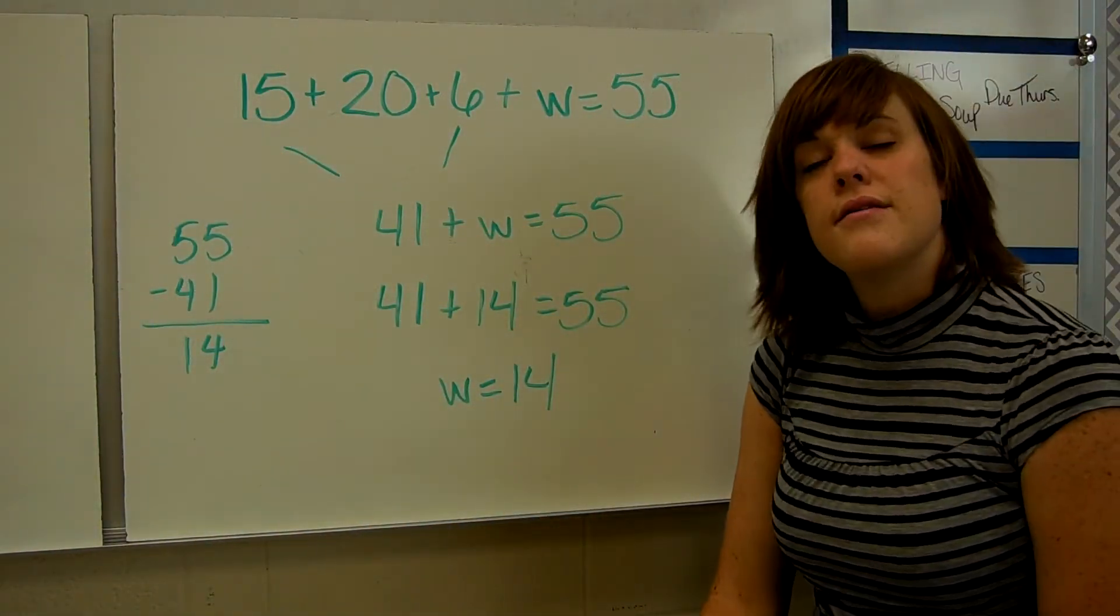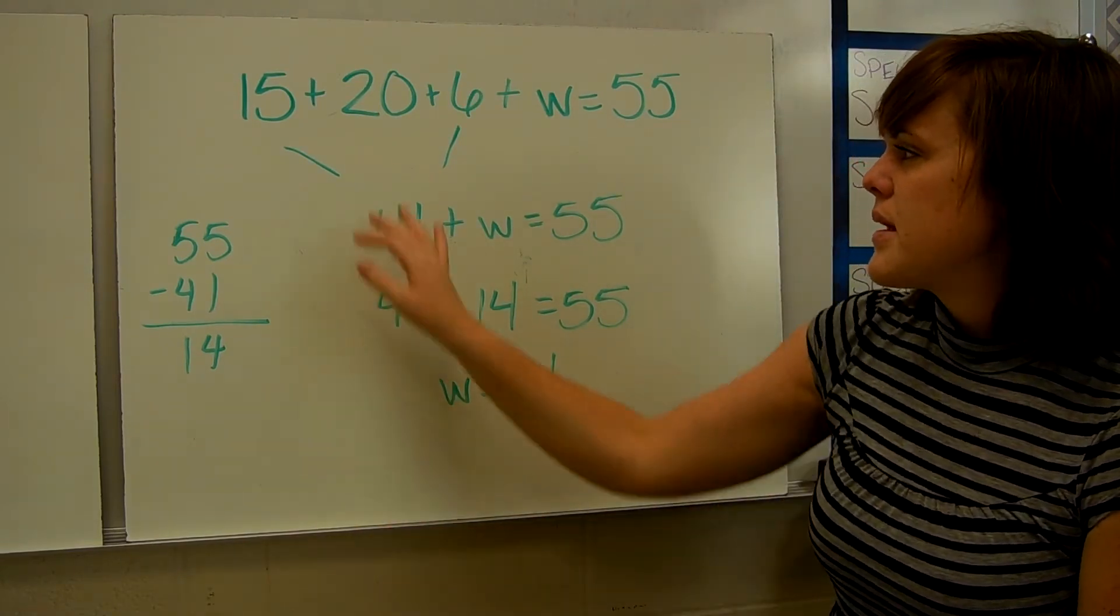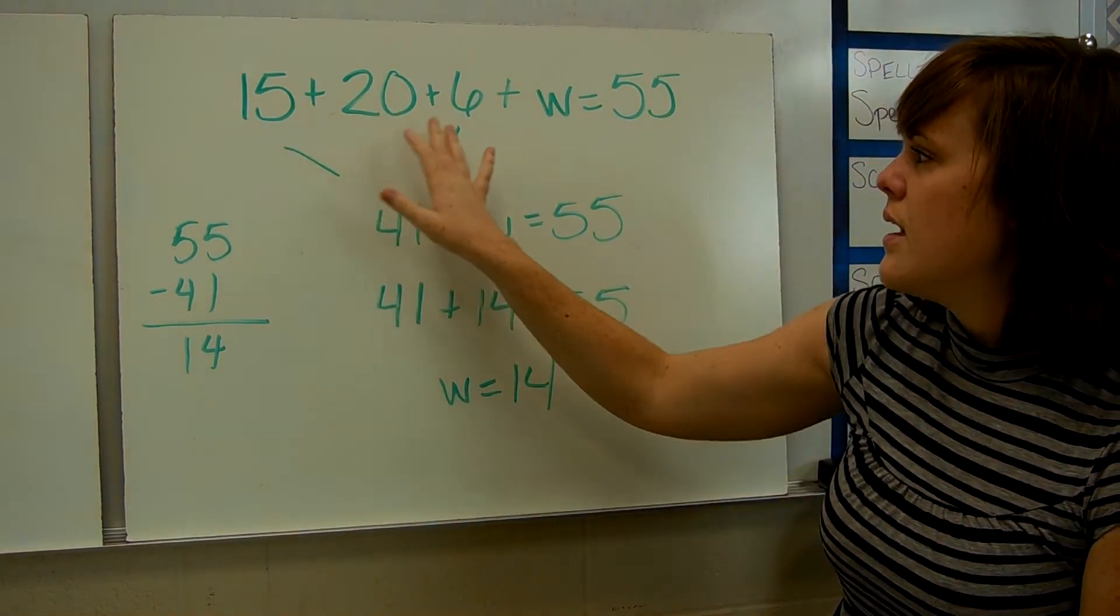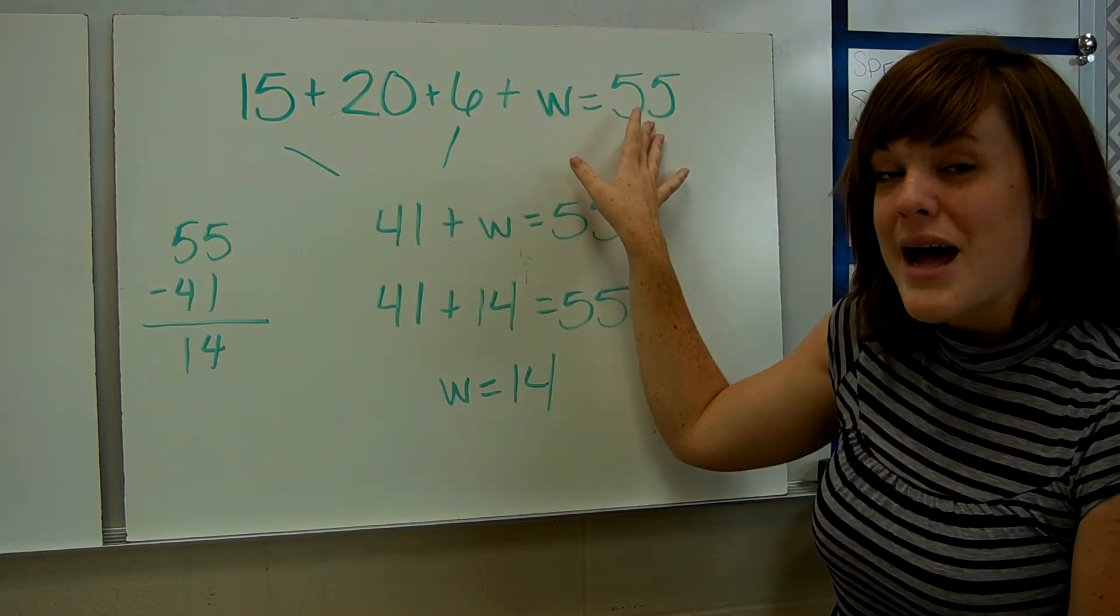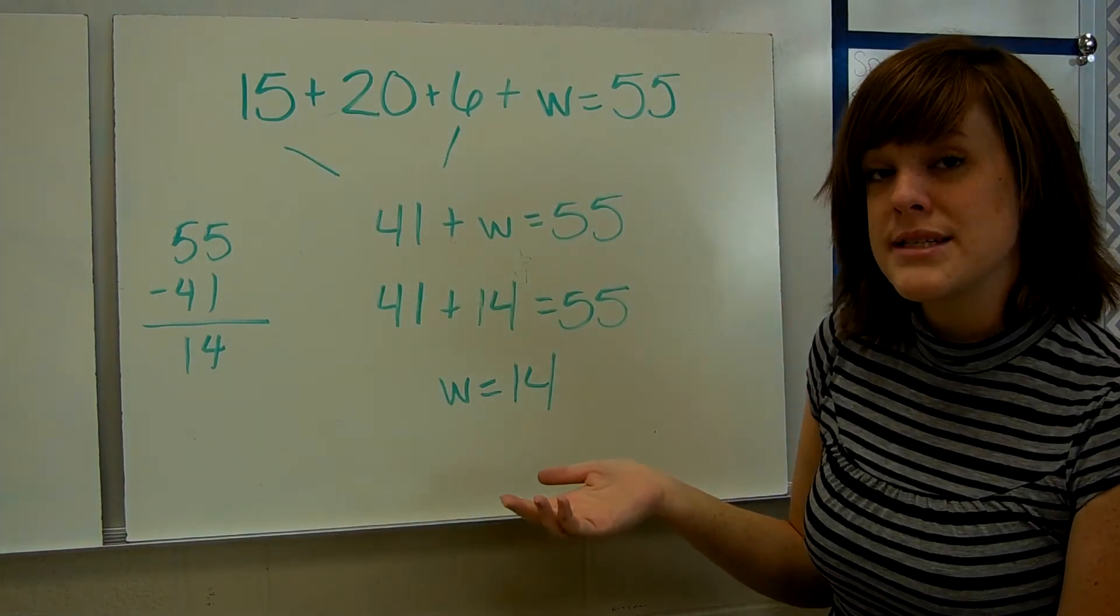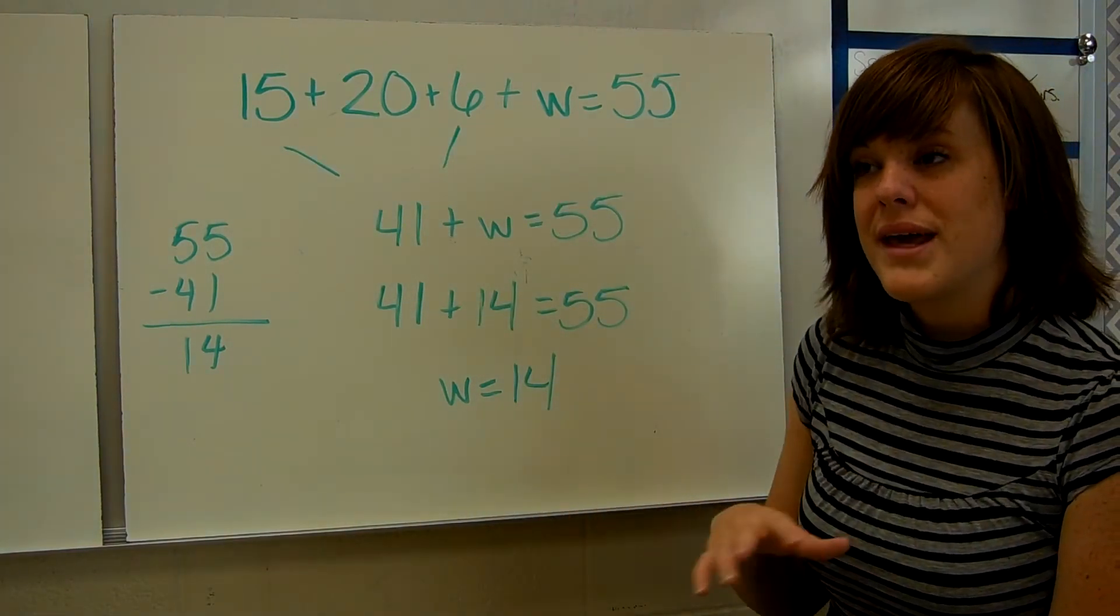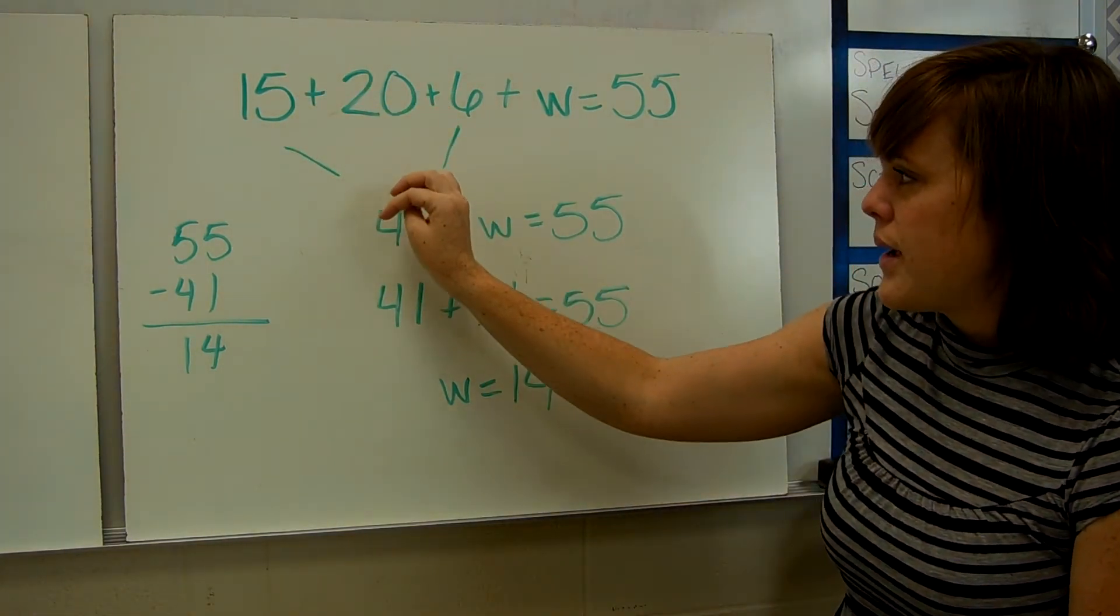Here's another of a similar equation, but it's a little bit more complicated, because we have 15 plus 20 plus 6 plus W equals 55. There are four addends in this problem. Now, we know because of the commutative property, we can add them together in whatever order we want. So let's add these three together right away, which add up to 41.